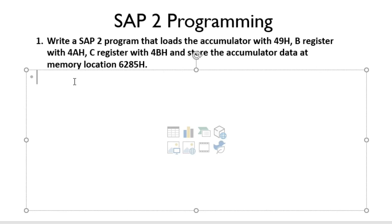So now let's proceed. In this problem, we will make use of the accumulator, registers B and C, and the instruction set of SIP2. If you haven't seen our tutorial about the SIP2 instruction set, please make sure to see that before going through this.